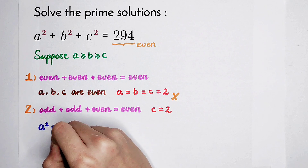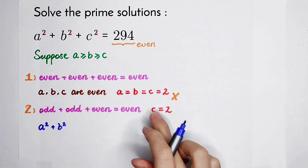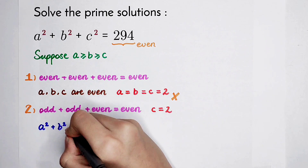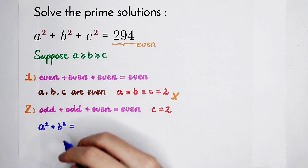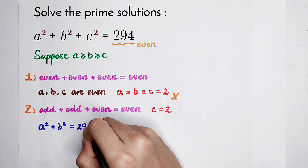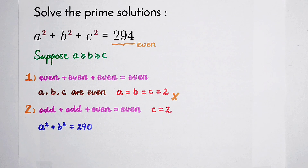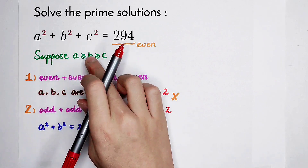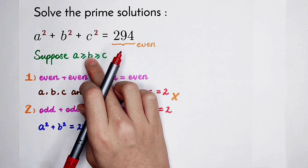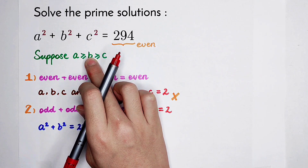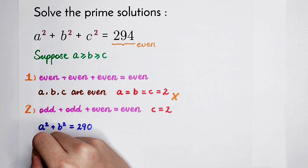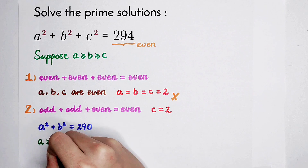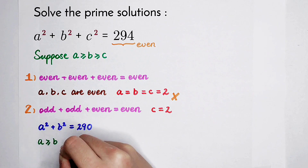Now, a squared plus b squared plus c squared becomes a squared plus b squared plus 2 squared, which is 4. That means a squared plus b squared equals 294 minus 4, which is 290. Since we supposed a is greater than or equal to b, how should we solve this?